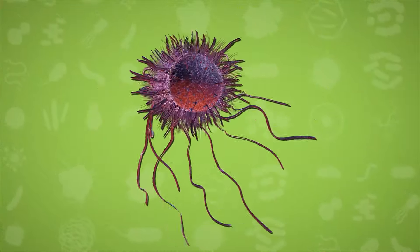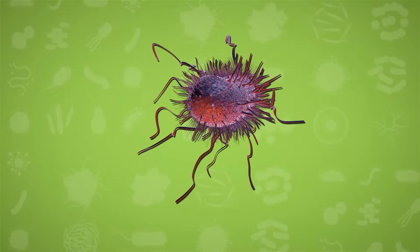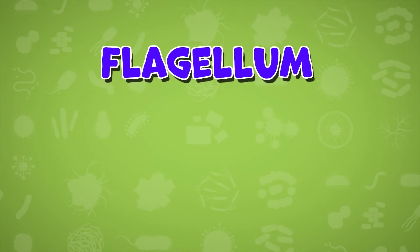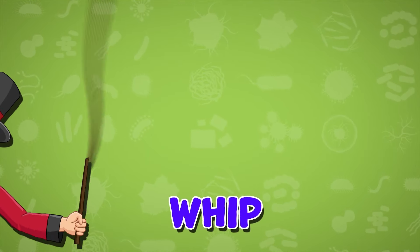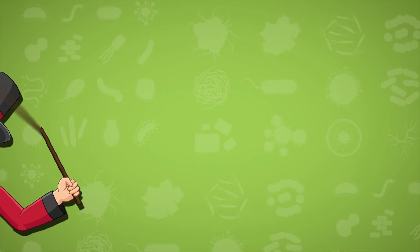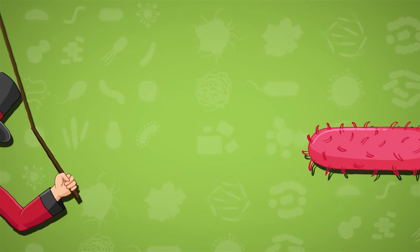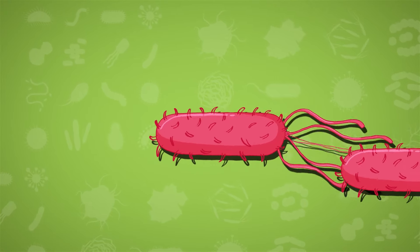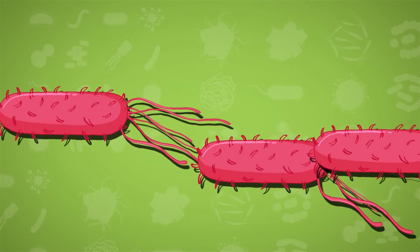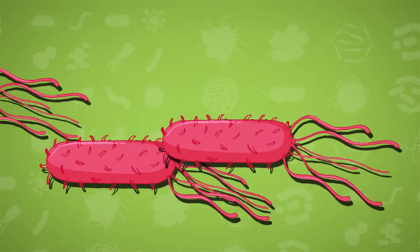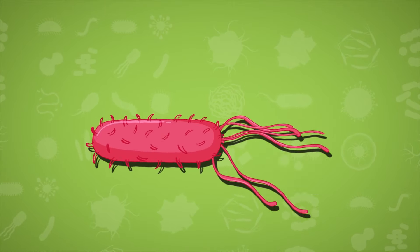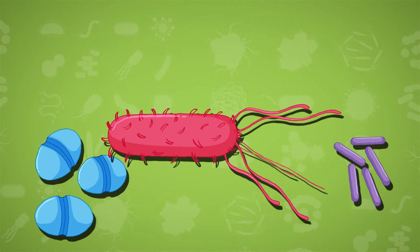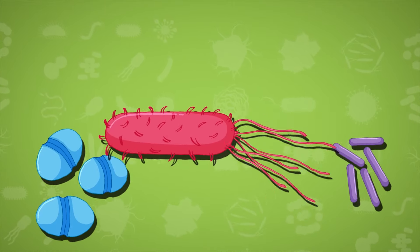It is essential for the movement of bacteria. The word flagellum means whip. The flagellum have a whip-like appearance that helps to propel the bacteria cell through the liquid. Bacterial flagellum rotate like screws. Not all bacteria have flagellum.